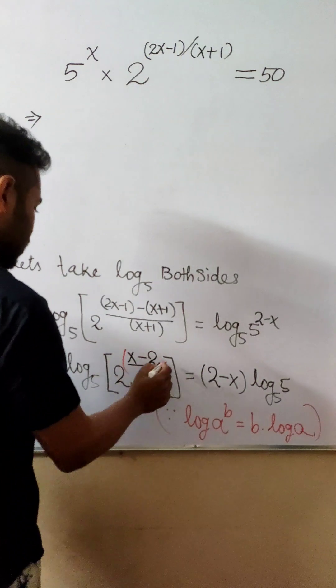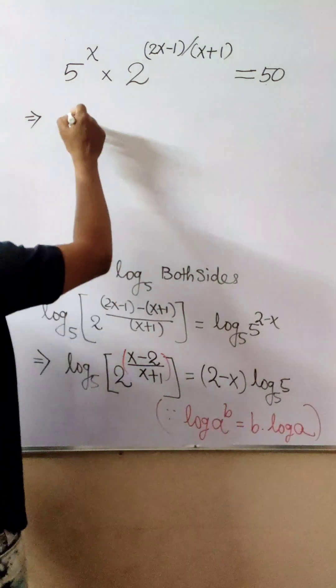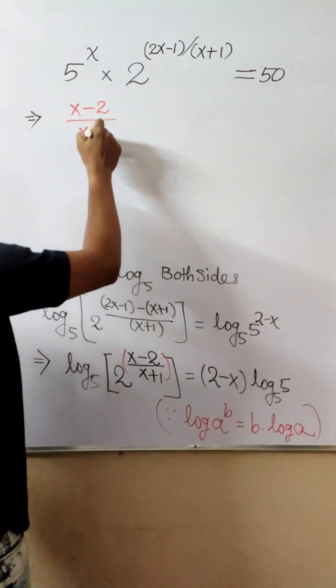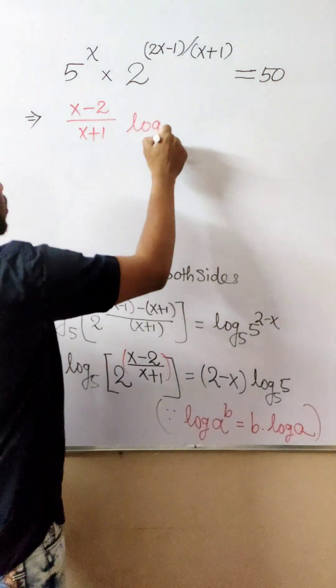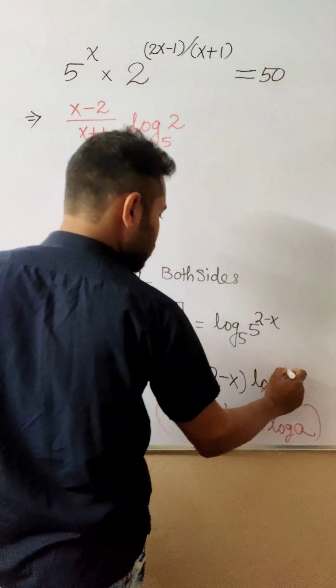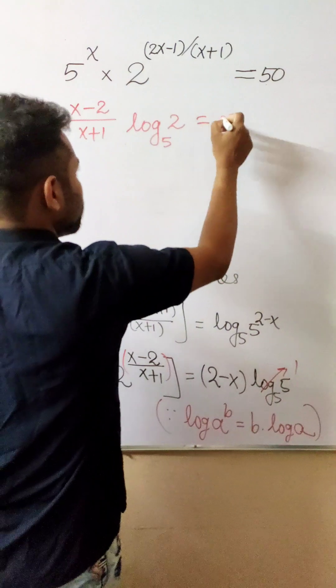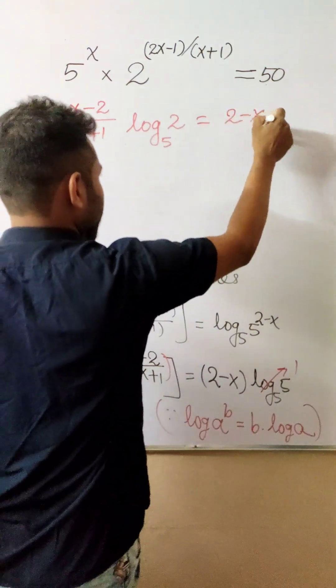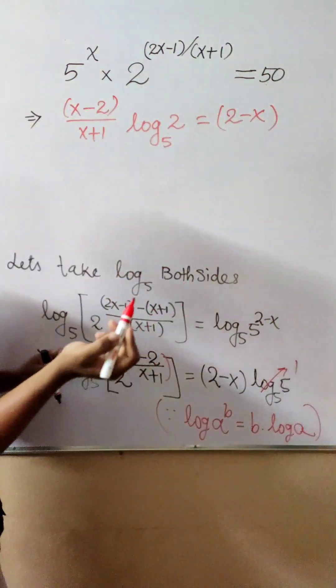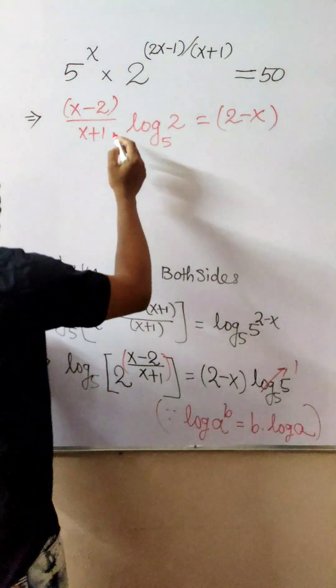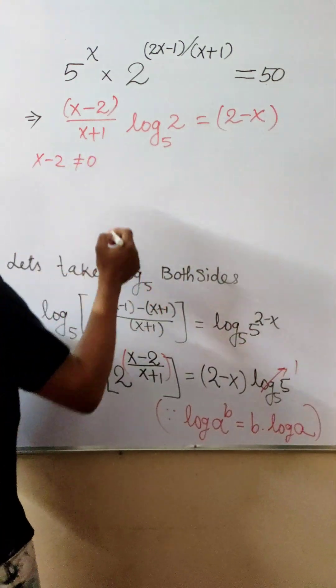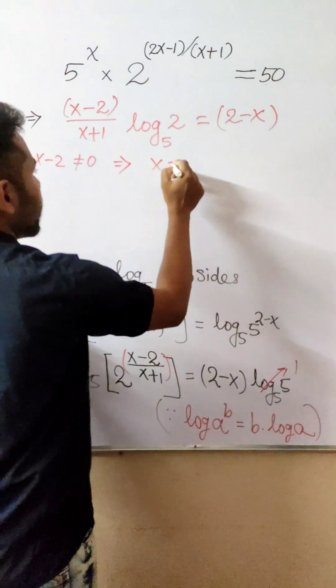So this becomes (x-2)/(x+1) times log₅(2) equals 2-x. You can see here x-2 and 2-x. We can divide both sides because x-2 is not equal to 0. Therefore, the first solution is x equals 2.